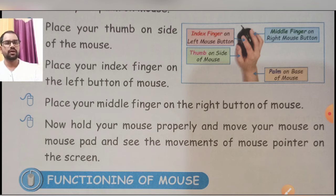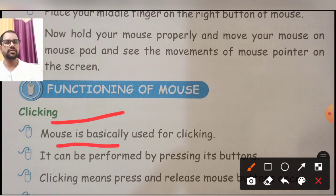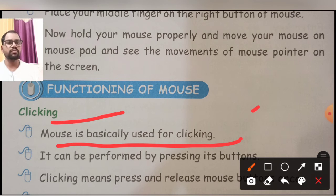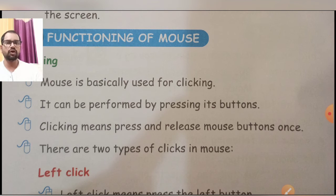Now, functioning of a mouse — what is the main functioning of the mouse? Mouse ki functioning kya hai? So the first function is clicking. Mouse is basically used for clicking — mouse ka basically hum apni file folder ko click karne ke liye use karte hai, ya open karne ke liye use karte hai. It can be performed by pressing its buttons. Clicking means press and release the mouse button once. Click karne ke baad clicking tabhi perform hogi jab aap usko release karenge — means jab aap button ko press karenge, dabaenge, aur isko chhodenge, tabhi aapka jo bhi function aap chahte hai woh perform ho payega.